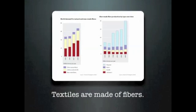Now we also have to take into consideration the type of fiber that the clothing is made from. The graph on the left shows global demand for natural and man-made fibers. In 1990, a majority of the textiles were manufactured in cotton, wool, silk, and other natural fibers. Whereas since the early 2000s, production has shifted to predominantly man-made fibers.